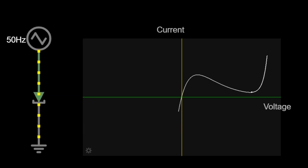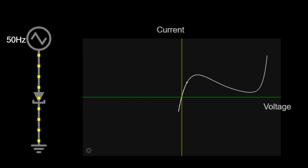This weird behavior makes the tunnel diode very fast and very useful. It can turn on and off much quicker than a normal diode, making it great for things like radios, satellites, and high-speed computers. Because of its speed, it is used in places where regular diodes are too slow.